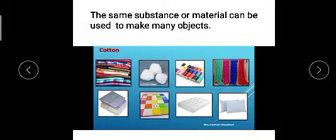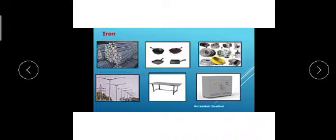See another example: iron. We can make from this substance iron rods, utensils, pans, many machineries, electric poles, tables, and cupboards. These are different types of objects but the material used is the same.